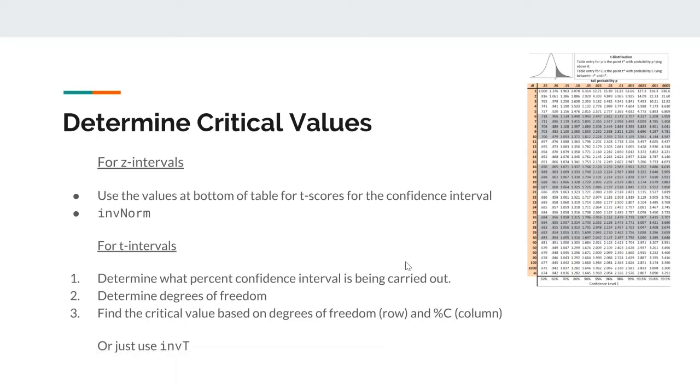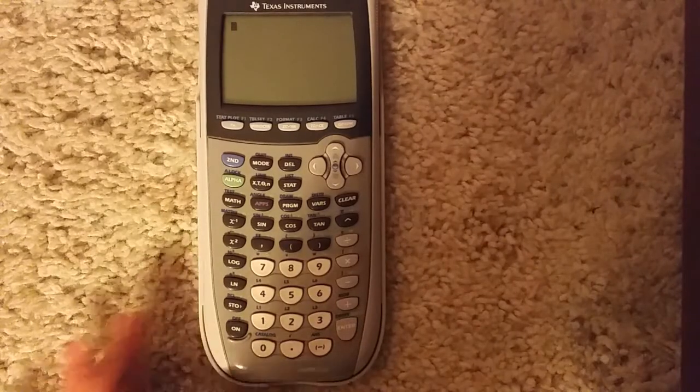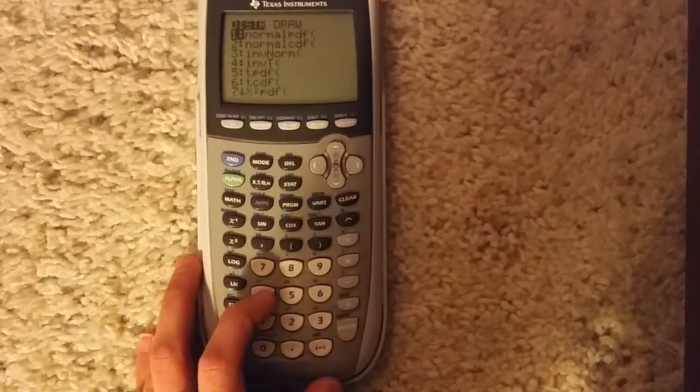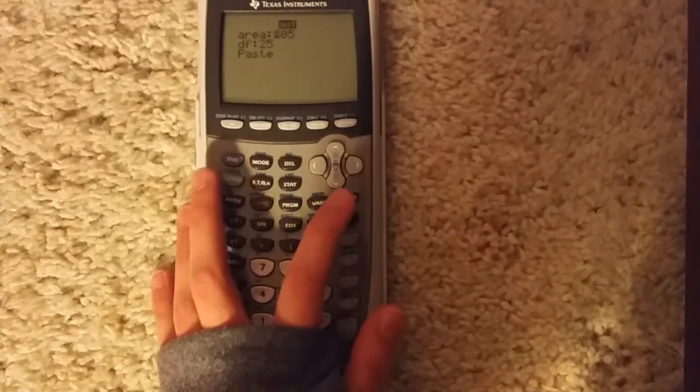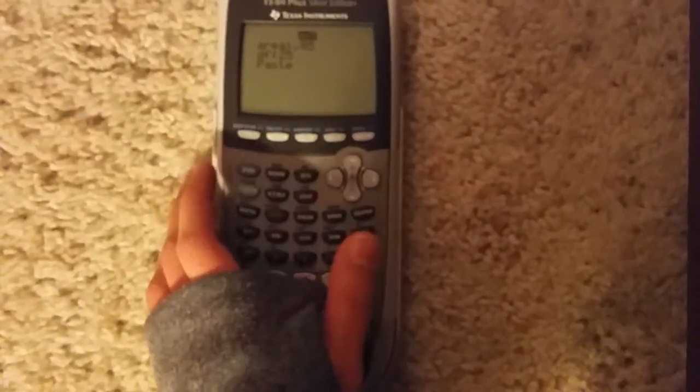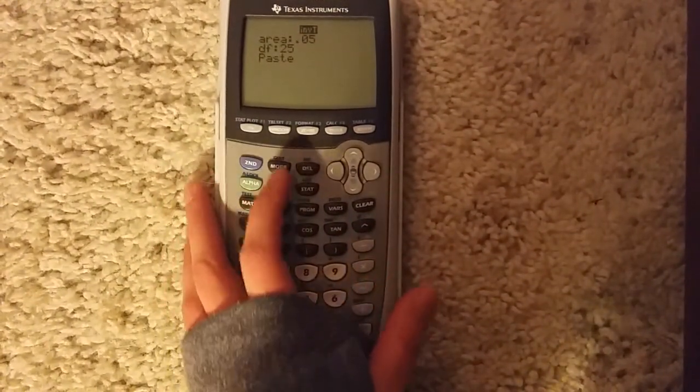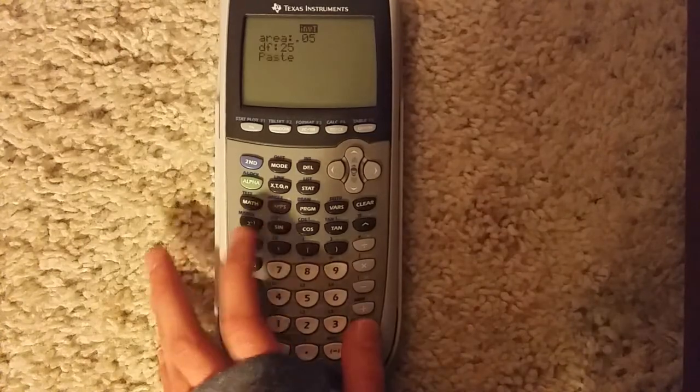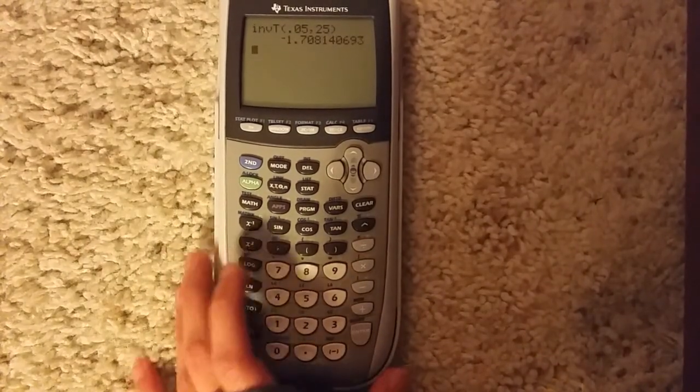Another way you could do this is use the inverse T function on your graphing calculator. For the critical value, you're going to hit second, distribution, inverse T. For a 90% confidence interval with 25 degrees of freedom, your area value is going to be the same as before. Degrees of freedom is 25. Hit paste, flip the sign, and that's your critical value.